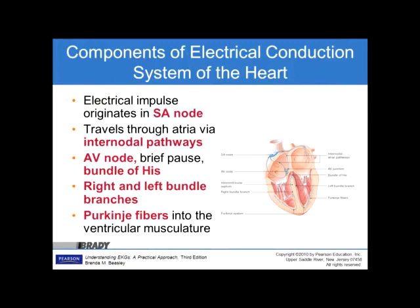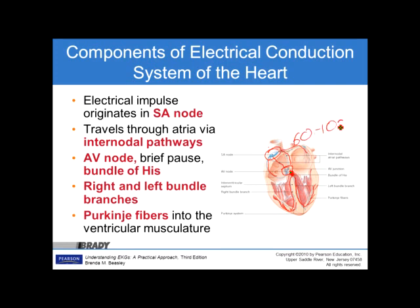Components of the electrical conduction system. The electrical impulse originates in the sino-atrial node, or SA node, travels through the atria via the internodal pathways, goes to the AV node — which is a brief pause — then goes to the bundle of His, into the right and left bundle branches, and then on to the Purkinje fibers, which transmit into the muscle tissue. Each one of these has an intrinsic rate: SA node is 60 to 100 beats per minute, AV node is 40 to 60, and ventricular muscle is 20 to 40 beats per minute.